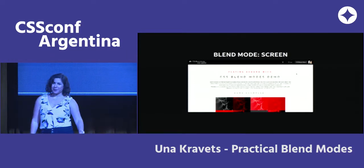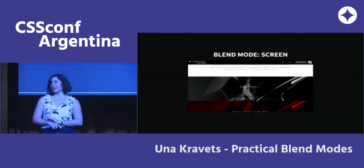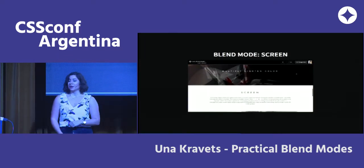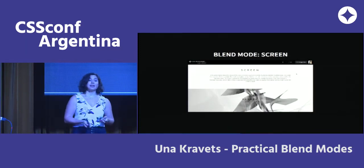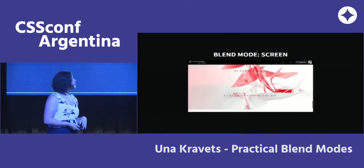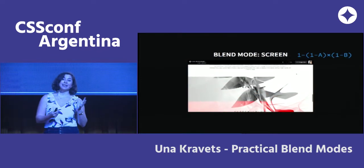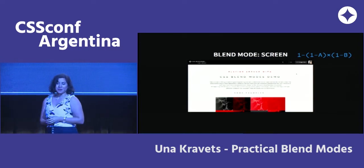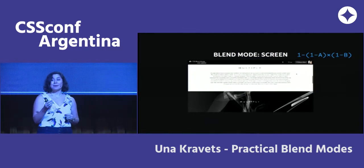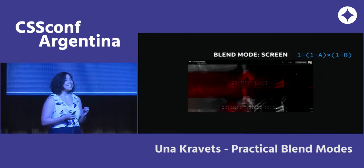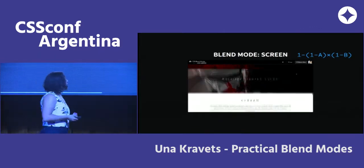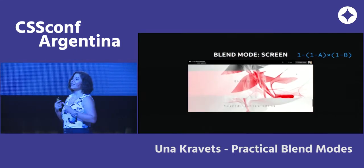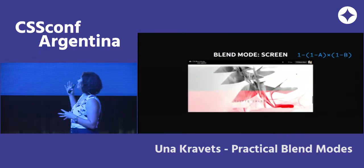The screen blend mode is the total opposite of multiply. In multiply we multiply luminosity values; in screen we take the inverse and multiply the inverse. You get the inverse of a pixel value by subtracting it from 1. So instead of A times B, we take the inverse of the active layer's luminosity, multiply it by the inverse of the background layer's luminosity, then invert the result — lightening up what multiply would have darkened.